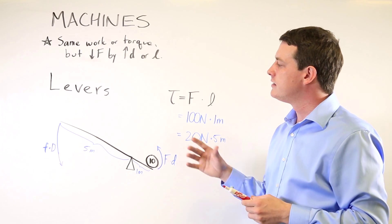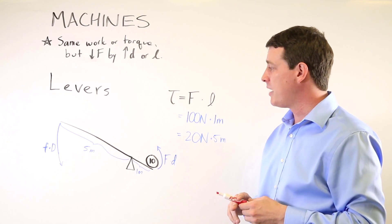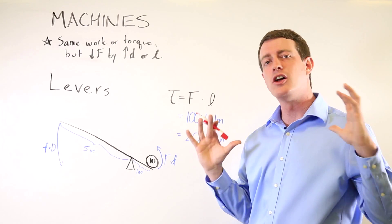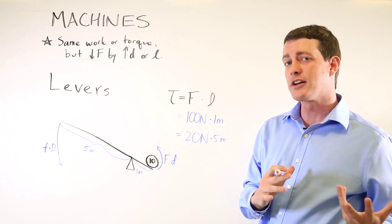And what you're doing here is here we have one meter and here we have five. And by having a five times as long lever arm, it reduces the amount of force that you need to apply by a factor of five.